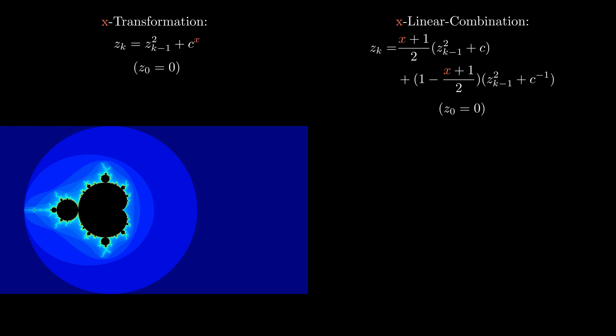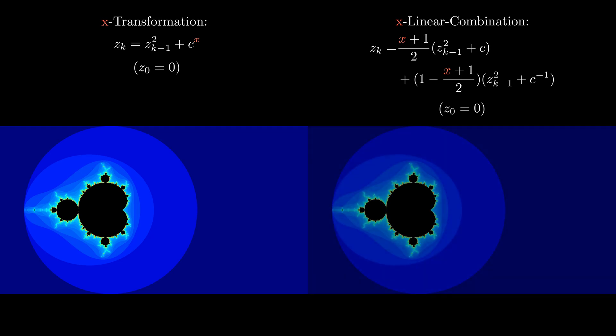We can see that for x equals 1, the right side corresponds to the normal Mandelbrot set. And for x equals minus 1, the right side corresponds to the inverted set. For everything in between, it will be a weighted sum of these two.